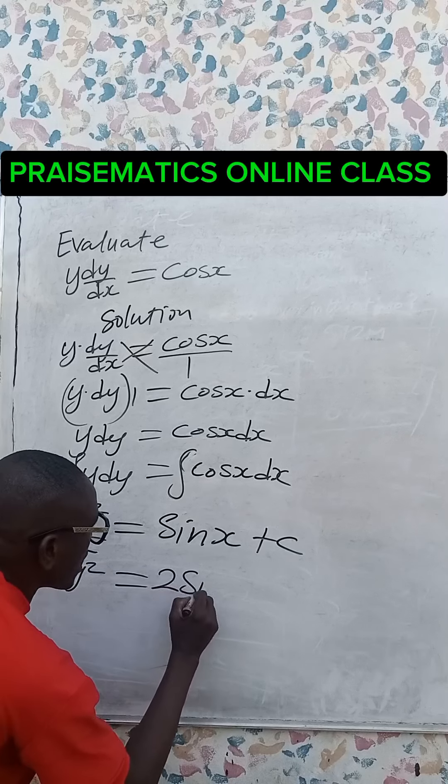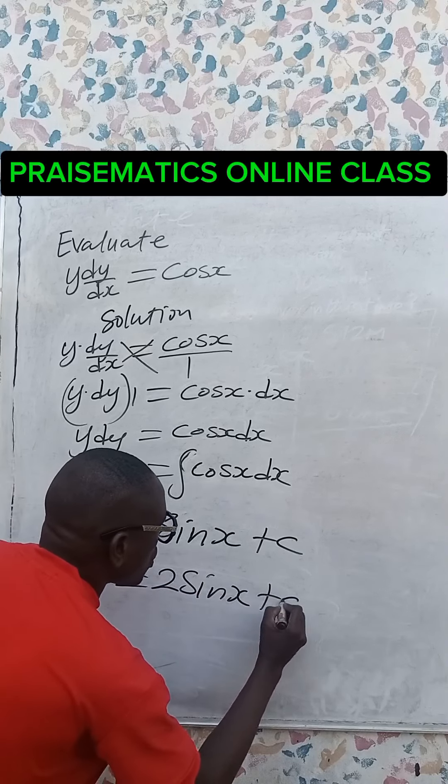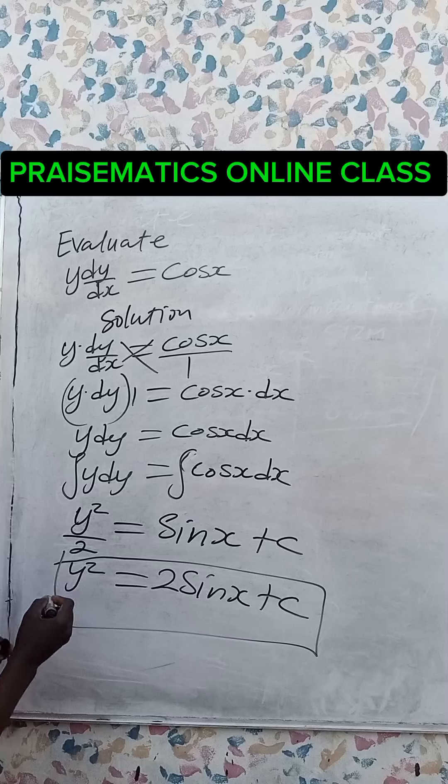We have y squared equals 2 sin x plus 2c, where c is the constant of integration.